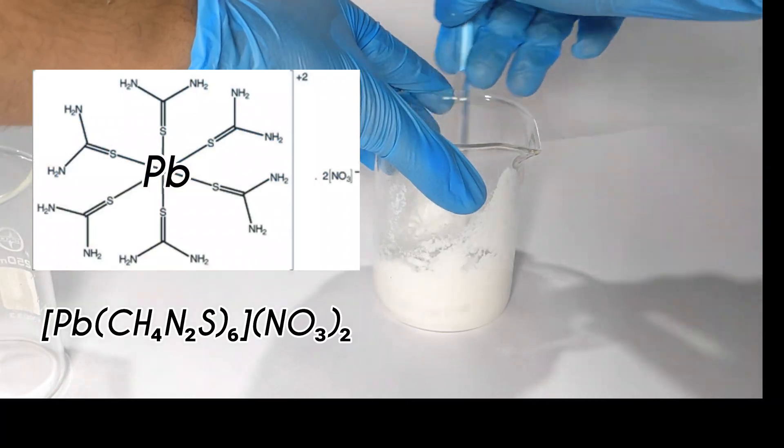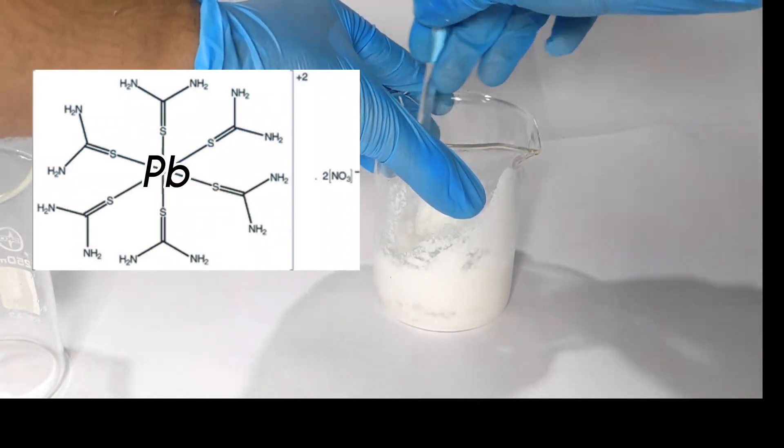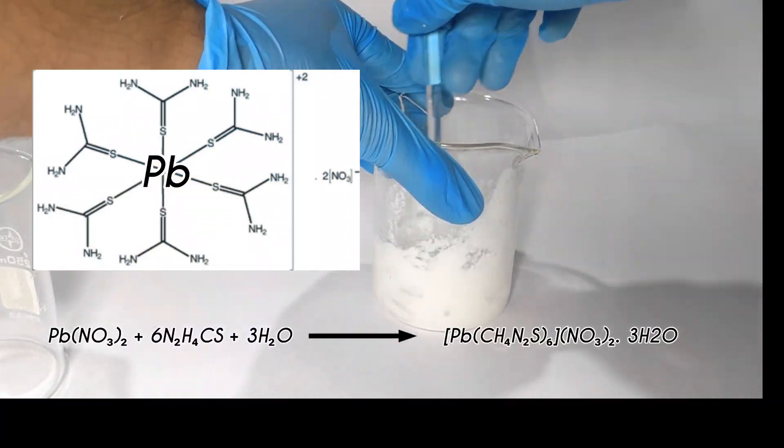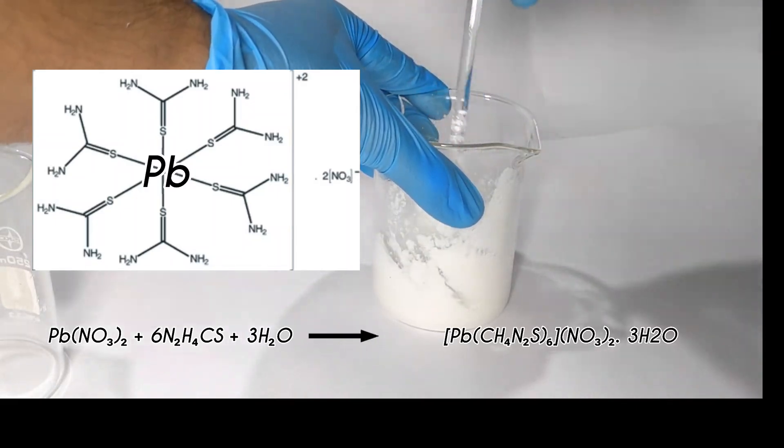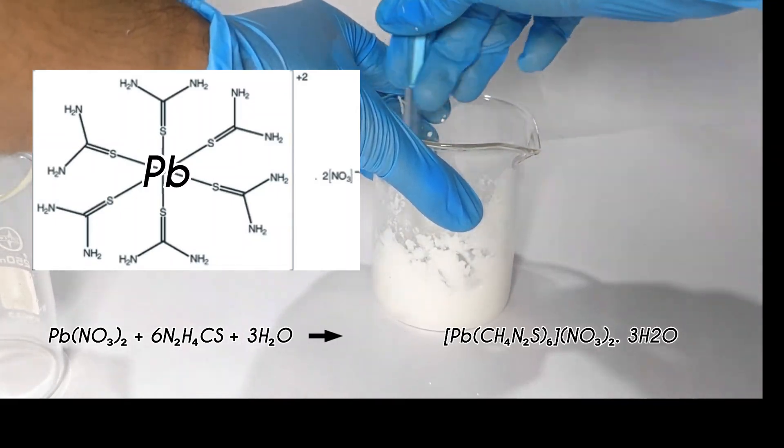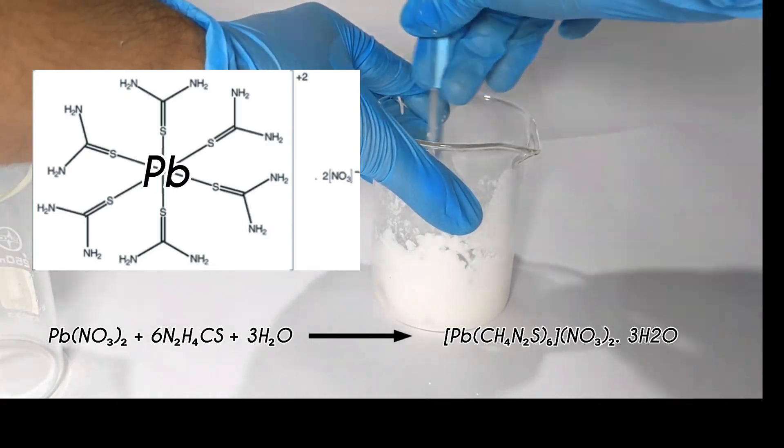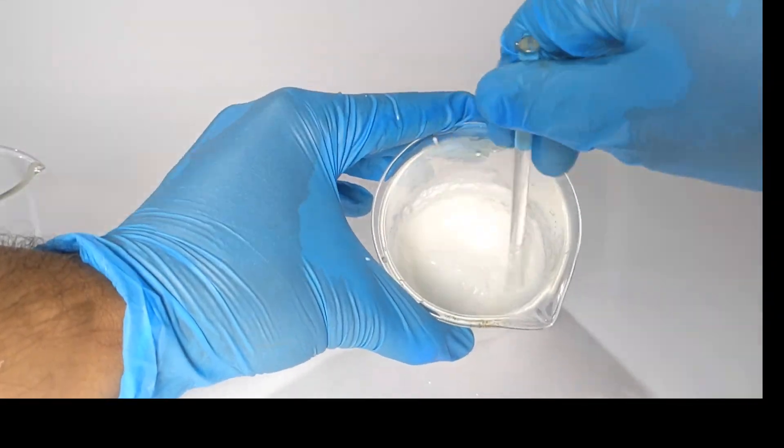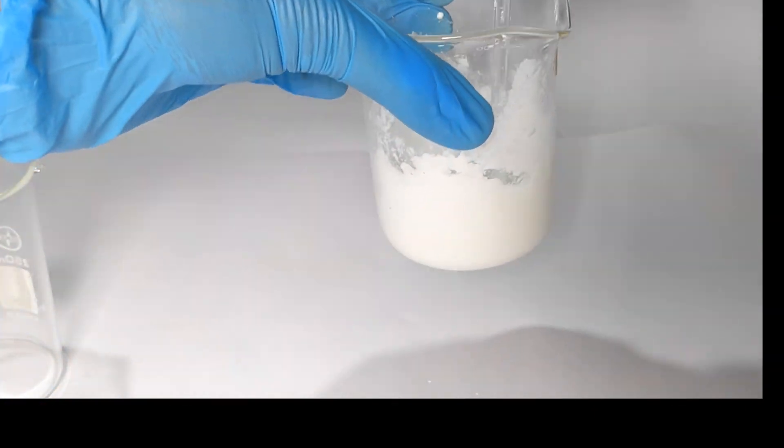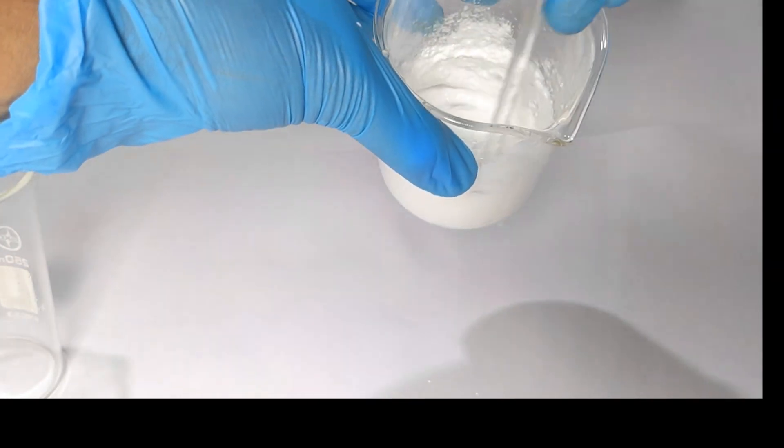This is the crude crystalline precipitate of hexakis(thiourea) lead(II) nitrate. This coordination compound has lead-ion in the center linked octahedrally with the sulfur moieties of six thiourea molecules. The crude crystalline precipitate somehow reminds me of vanilla ice cream.